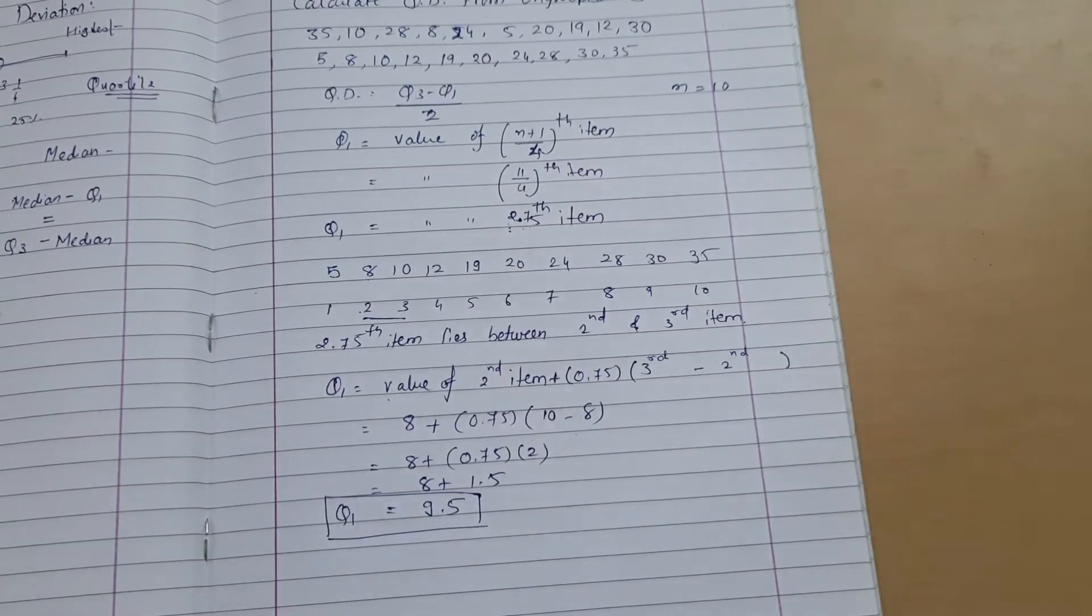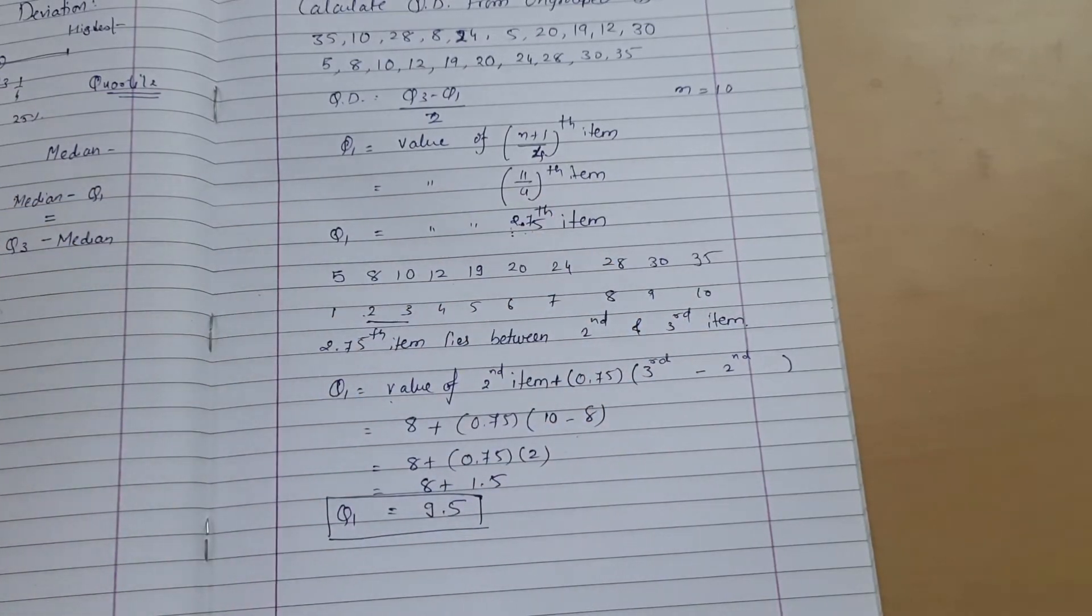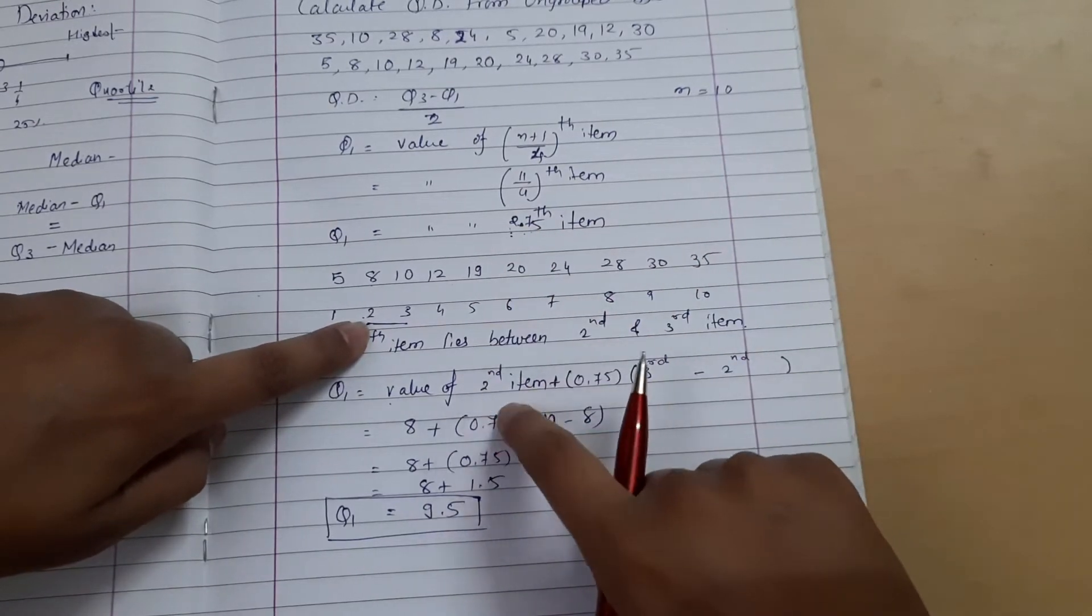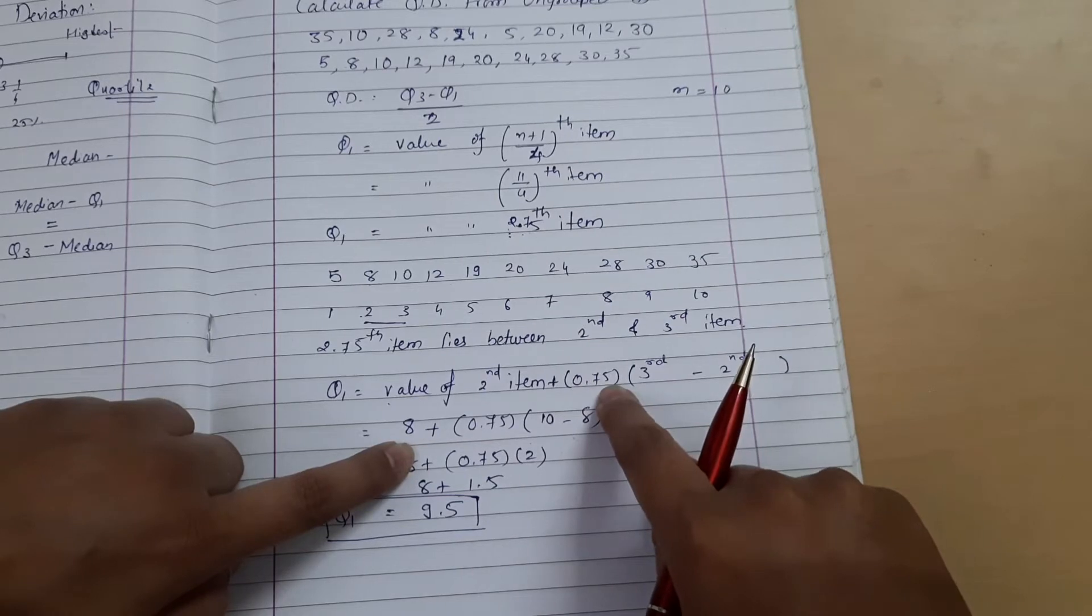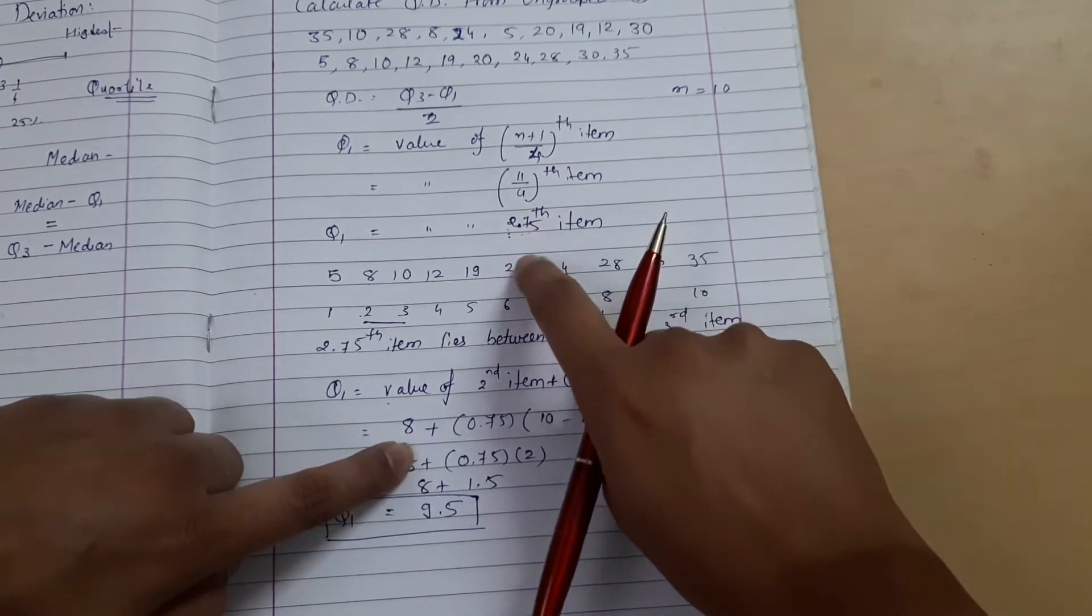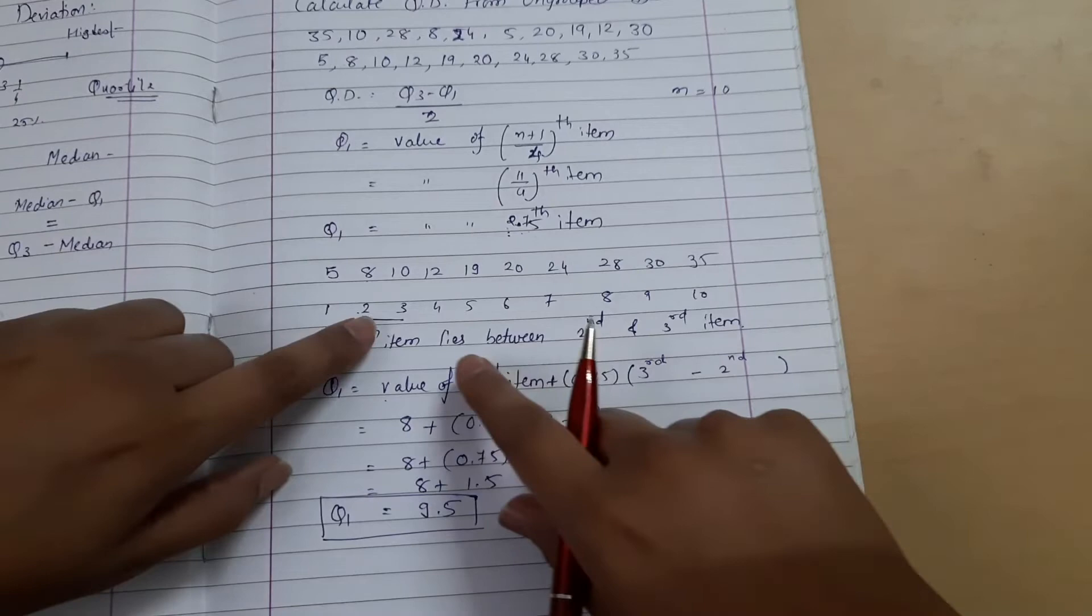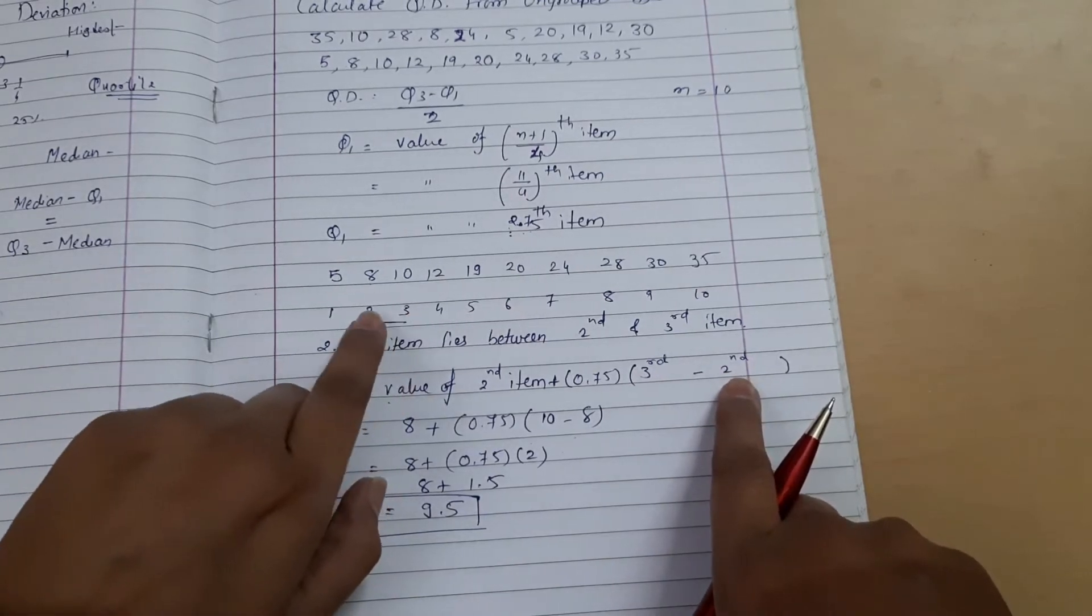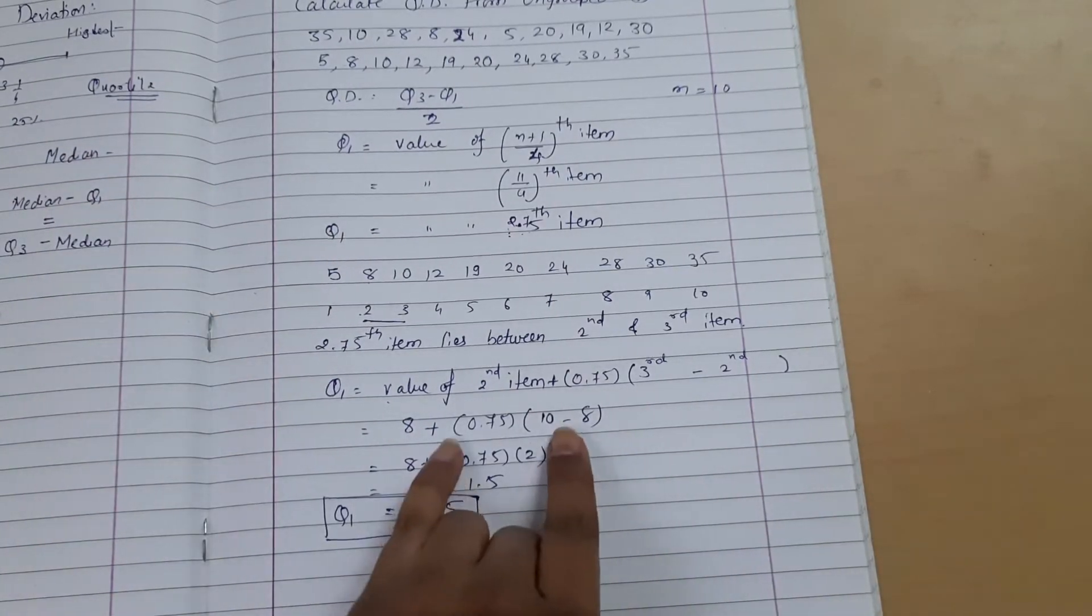I repeat: 2.75th item directly is not possible, so we find the value at that position. The 2nd position value plus the fractional part 0.75 multiplied by the difference. That is, 8 plus 0.75 times (10-8), which is 2.